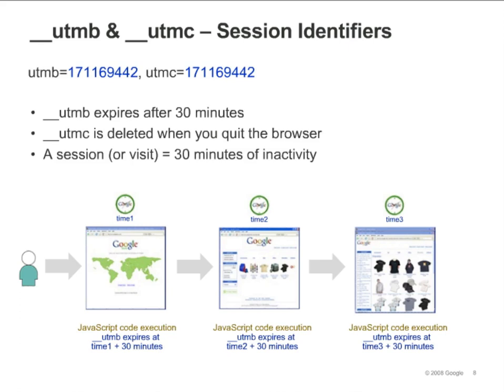To summarize: when the visitor loads a page, the JavaScript in the Google Analytics tracking code checks for both the UTMB and UTMC cookies. If either one is missing, it notes this is a new session and creates whichever cookie — UTMB, UTMC, or both — was missing. Note that it's possible to adjust this behavior. With a small customization to the Google Analytics tracking code, you can make the session timeout length anything you want. You'll learn about this in the Code Customizations module.